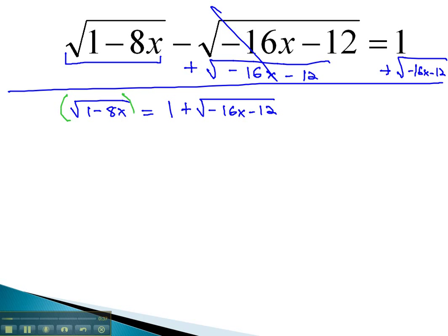Now that that first radical is alone, we can clear it by squaring both sides. Square and square root are inverses, and we're left with 1 minus 8x.